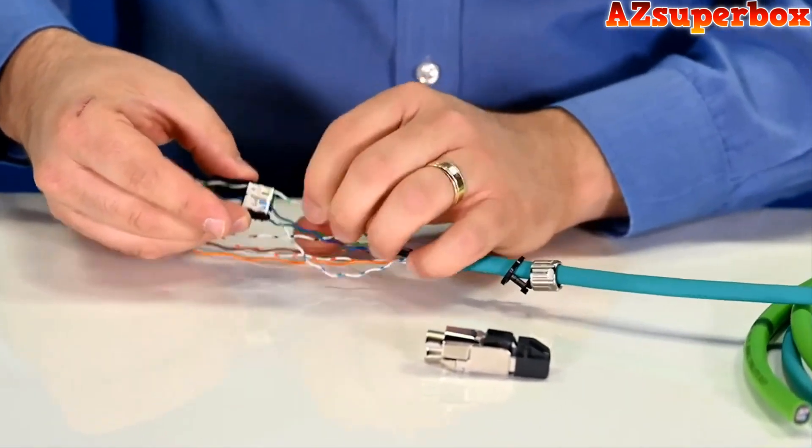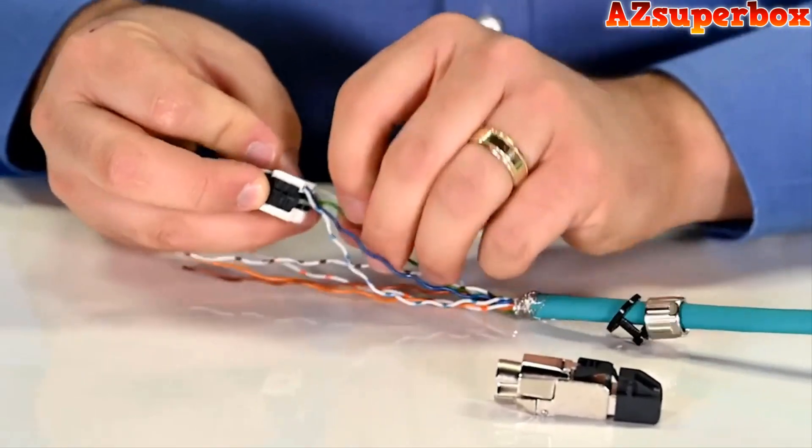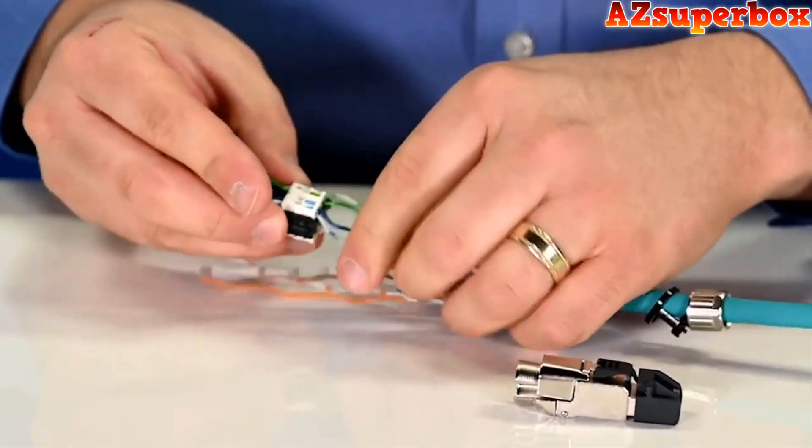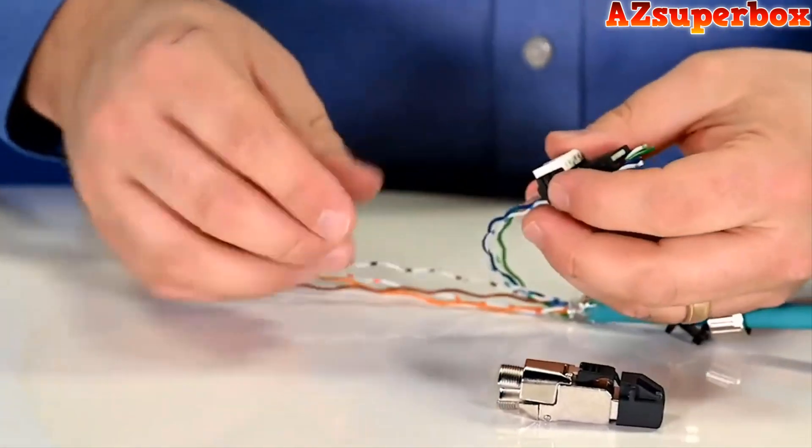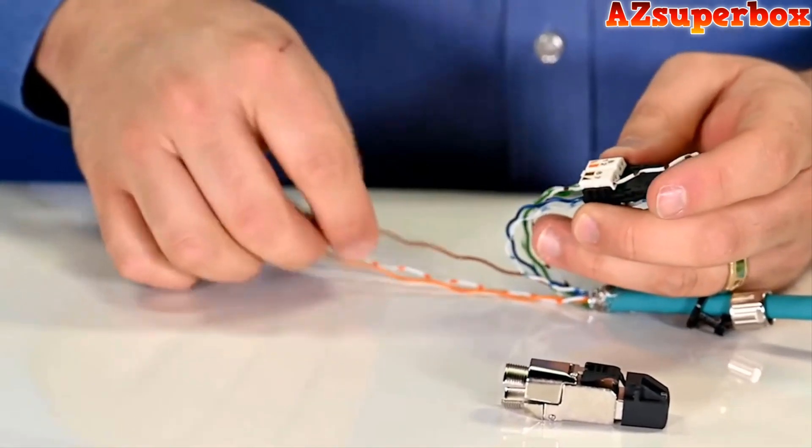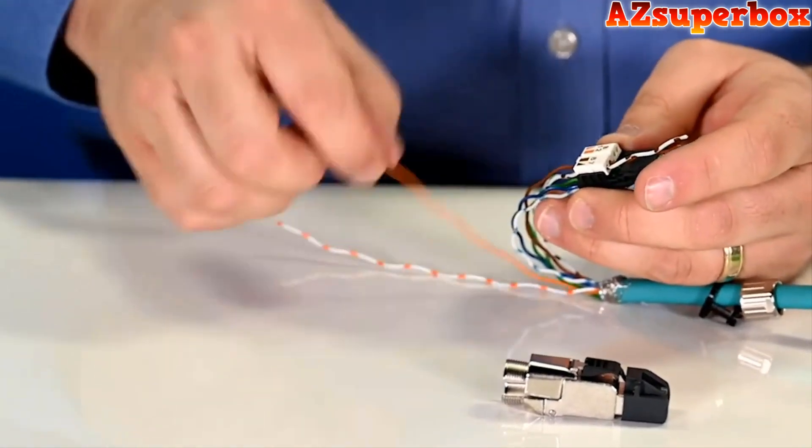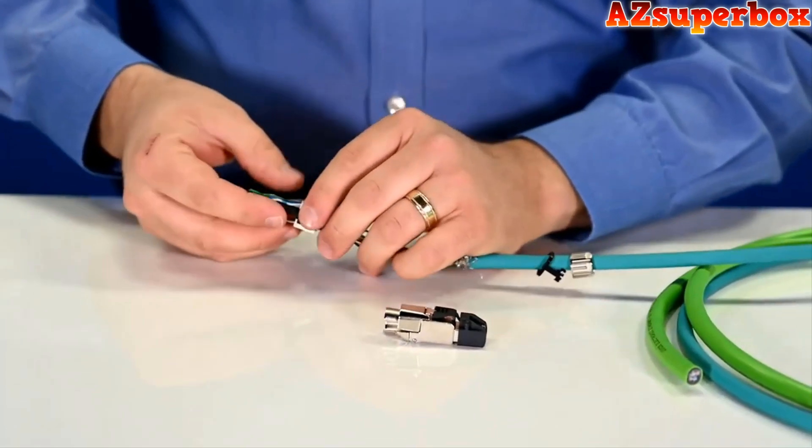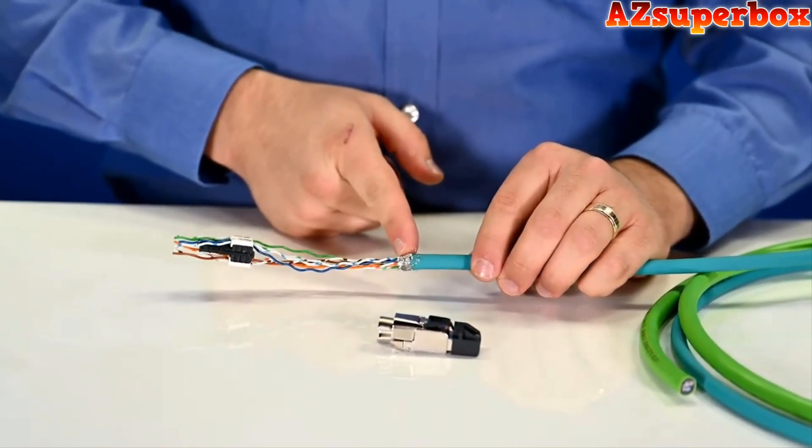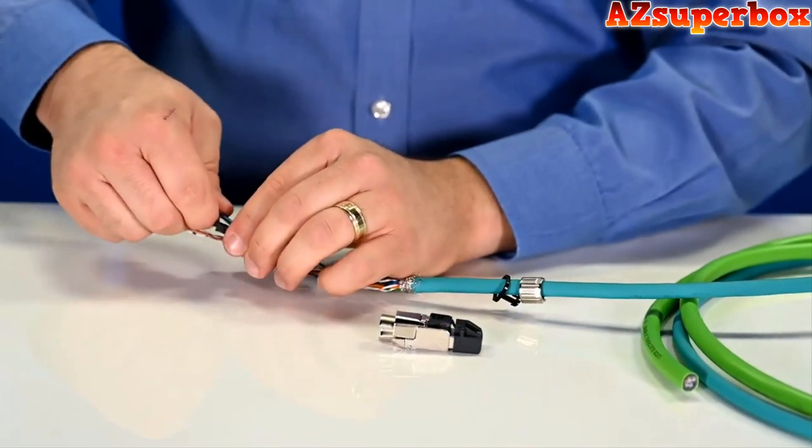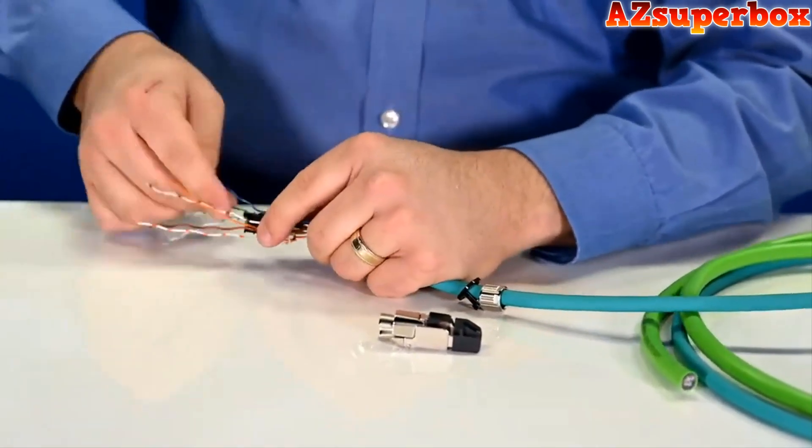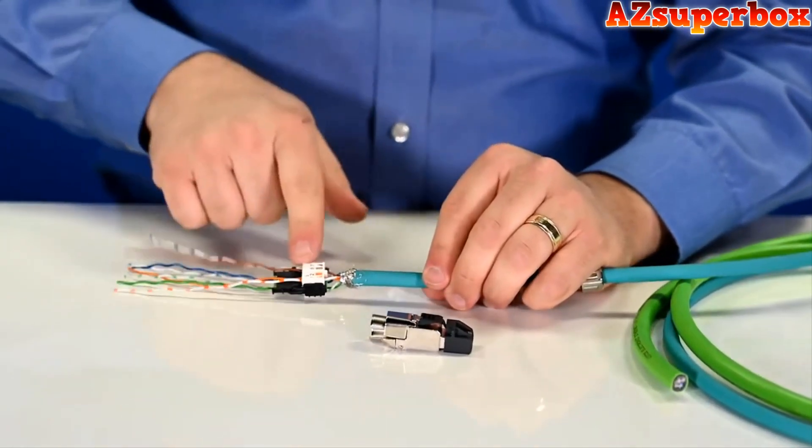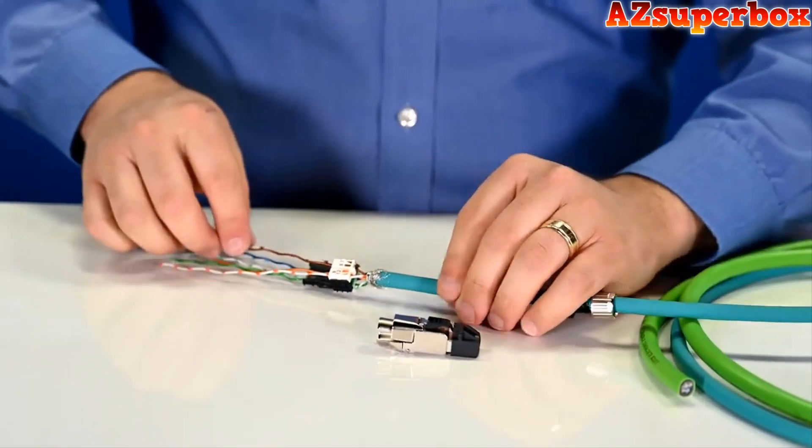So we just simply match each conductor with the corresponding color on the connector. And you'll see those conductors are going all the way through the connector housing. Do the same thing on the back side. And now all we have to do is slide this part of the connector all the way down against our cable jacket. We want to make sure that connector is nice and tight against the cable to eliminate as much of this unshielded area as we can.